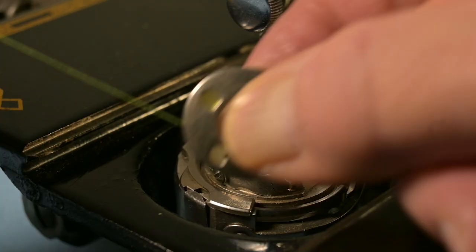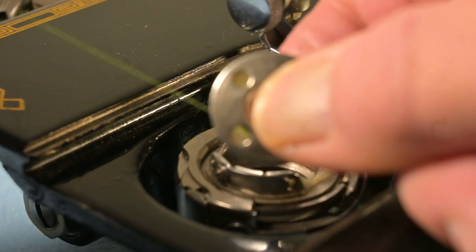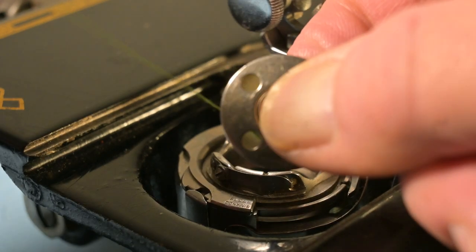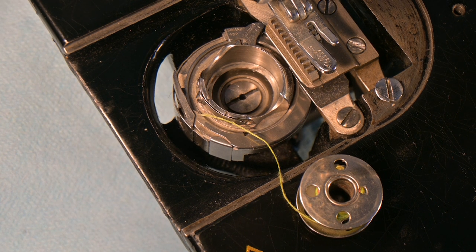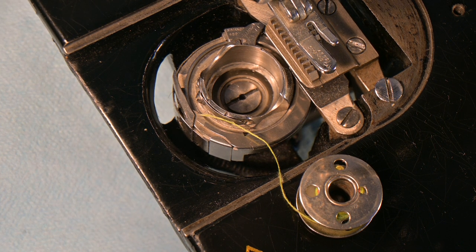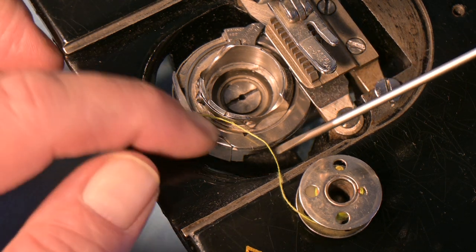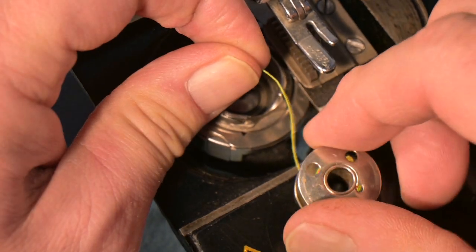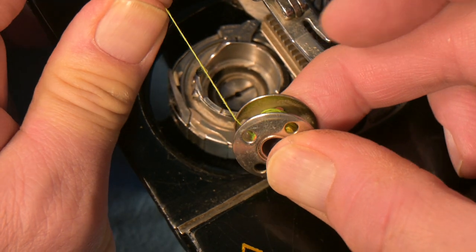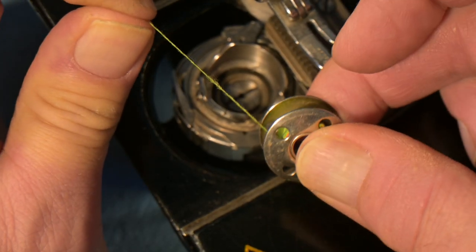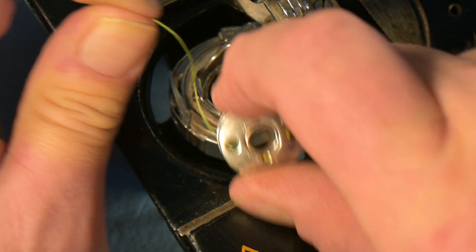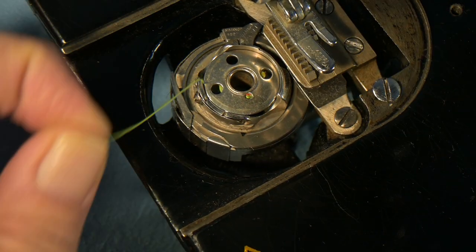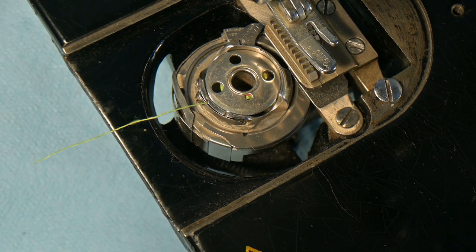To get started, we want the thread to come off the bobbin on the left side, bottom to top on the left side. The bobbin is installed in the bobbin case holder with the thread coming off the bobbin. And as it comes up to the top side, we see the thread on the left side of the bobbin and we drop it in and there the bobbin is installed.